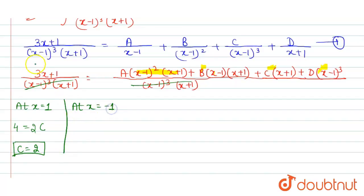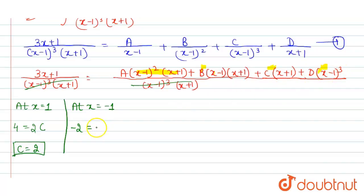Now check at x = −1. The left-hand side gives 3(−1) + 1 = −2. On the right-hand side, the A, B, and C terms all cancel since (−1 + 1) = 0. Only the D term remains: (−1 − 1)³ = (−2)³ = −8. So −2 = −8D, giving D = 1/4.